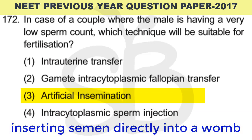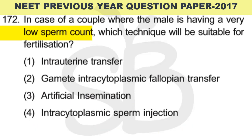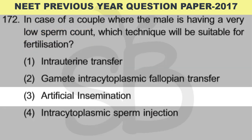The male partner is producing sperm but the number of sperm is very low, so fertilization is less likely naturally. The sperm can be artificially injected to improve chances of fertilization. The correct answer is option 3: artificial insemination.